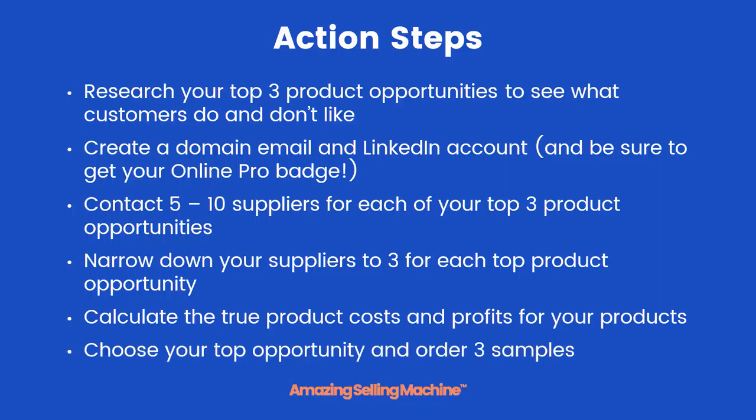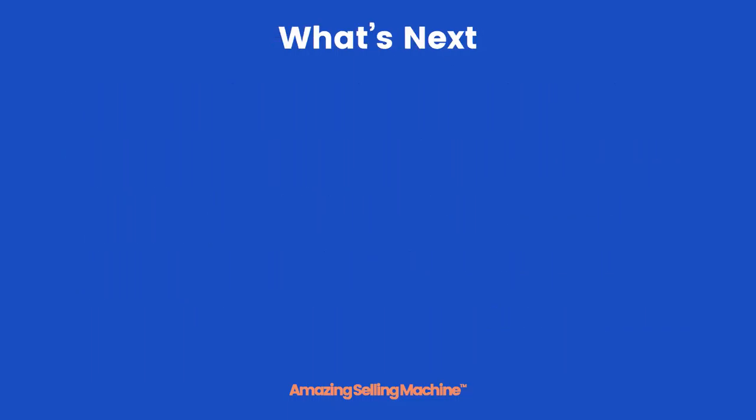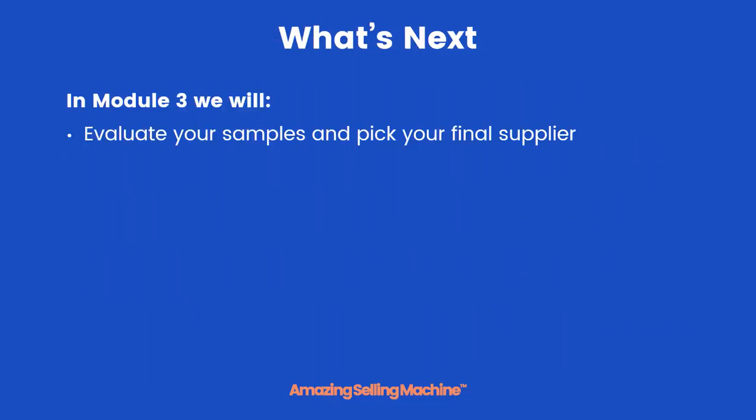Calculate the true product costs and profits for your products. And finally, choose your top opportunity and order three samples. Here's what's coming next: in module three, we'll evaluate their samples once they arrive and pick your final supplier.